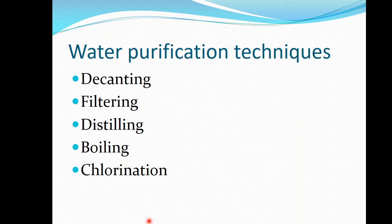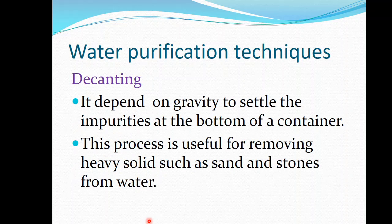Now, water purification techniques — how can we purify water? We can make water clean by decanting, filtering, distilling, boiling, or chlorination. Decanting depends on gravity to settle impurities at the bottom of the container. This process is useful for removing heavy solids such as sand and stones from water. When you have water with sand and stones, the stones will settle at the bottom and you are able to remove the clean water.